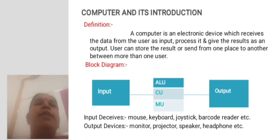Definition: A computer is an electronic device which receives data from the user as input, processes it and gives the result as output. Users can store the results or send from one place to another between more than one user.